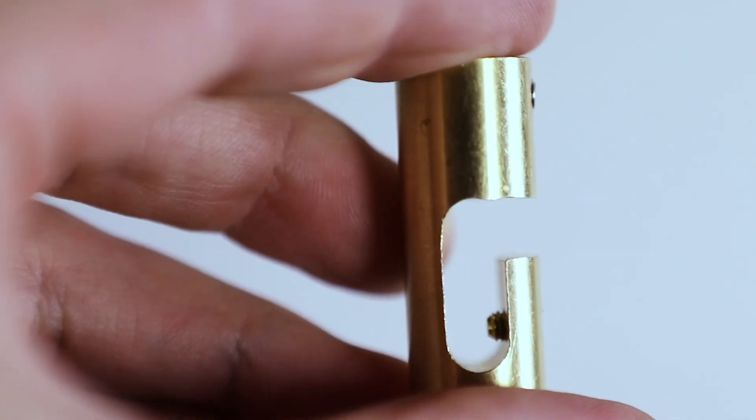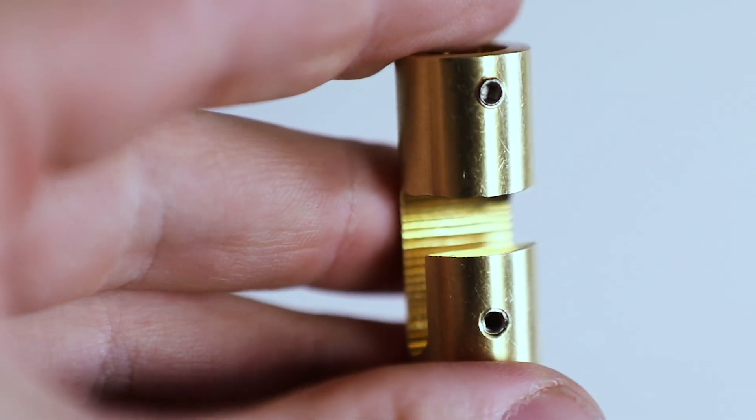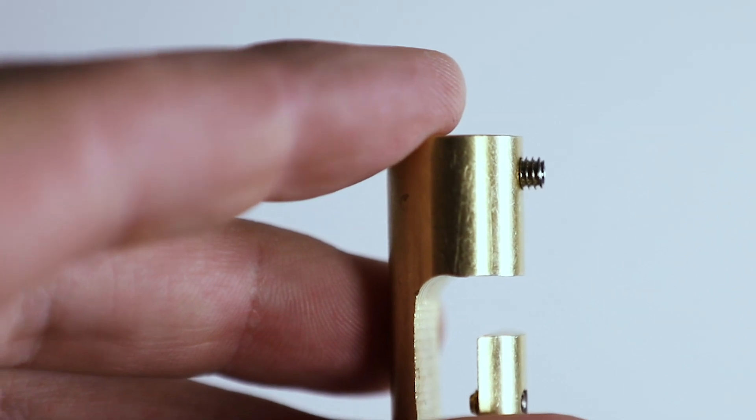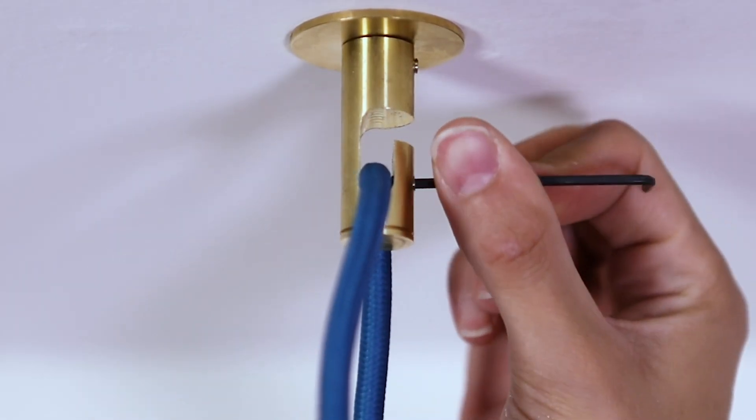Each Swag Hook design features a mini set screw to secure the Swag Hook to the back plate. And with our Pinch Hook design, an additional mini set screw is provided to lock in the pendant cord swag position.